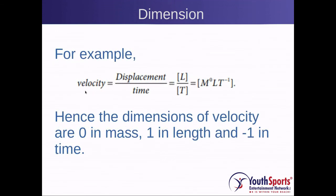Another example is velocity. Velocity is the change in location over time, and change in location is also called displacement. So you have L divided by T. Since T is the denominator, it is T to the negative one. So velocity has zero dimensions of mass, one dimension in length, and negative one in time.